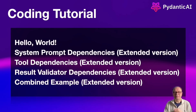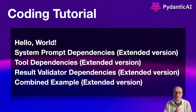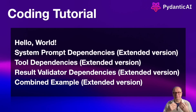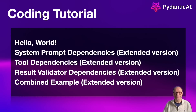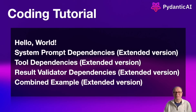Finally, in the combined example, we'll use all three DI approaches — system prompt, tool, and result validator — to build a stock market advisor agent that retrieves stock prices using the Yahoo Finance APIs. To keep this video concise, we'll cover the first example in full detail while the rest will be available in the extended version.